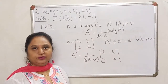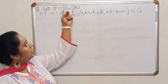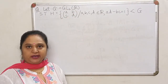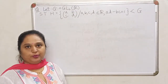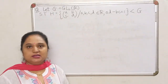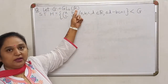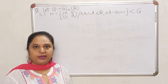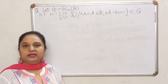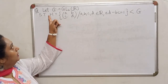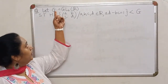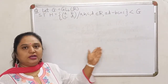Let's look at the next problem. The group given is GL₂(ℝ). We have come across this group in chapter 1. GL₂(ℝ) is the set of all 2×2 non-singular matrices with real entries, and this is a group with respect to matrix multiplication. Even if the group operation is not specified, it is understood to be matrix multiplication. So in G, we have 2×2 matrices whose determinant is not 0.